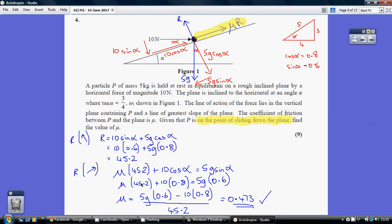So I'm rearranging to make mu the subject. So taking away 10 lots of 0.8, and then dividing through by 45.2, I get mu being 0.473.